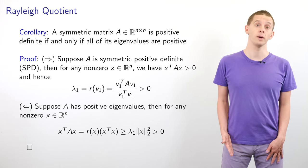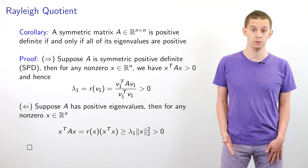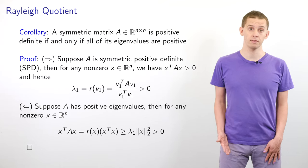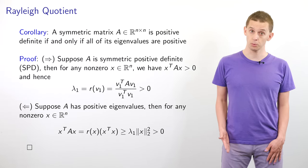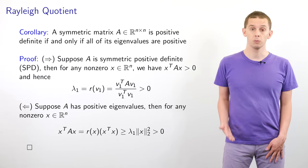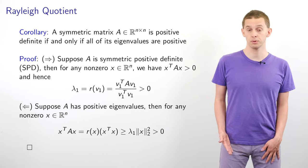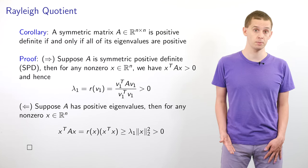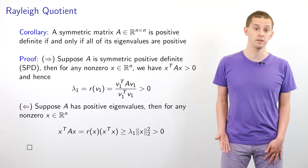Now for the other direction: suppose A has positive eigenvalues. For any non-zero vector x, x transpose Ax equals R(x) times x transpose x from the Rayleigh quotient definition. We know R(x) is greater than or equal to lambda 1, and x transpose x is just the Euclidean norm squared of x. Therefore this expression is greater than or equal to lambda 1 times the Euclidean norm squared, which is greater than 0. So we've established the result both ways.